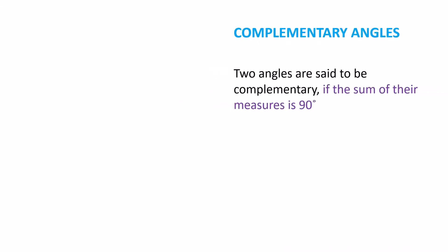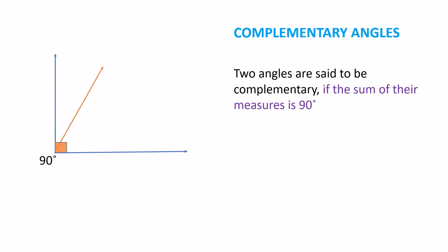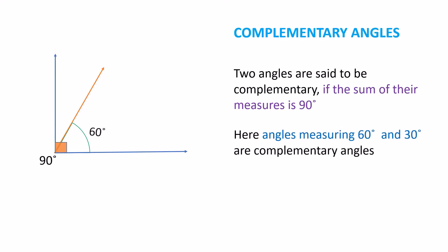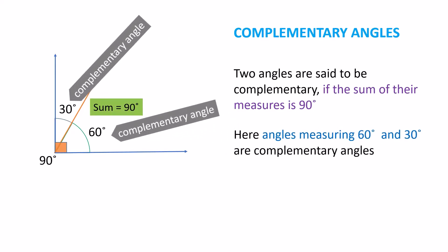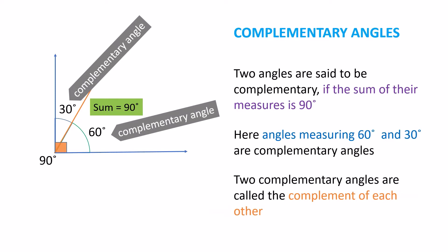Complementary Angles: Two angles are said to be complementary if the sum of their measures is 90 degrees. Here, angles measuring 60 degrees and 30 degrees are complementary angles. Two complementary angles are called the complement of each other.